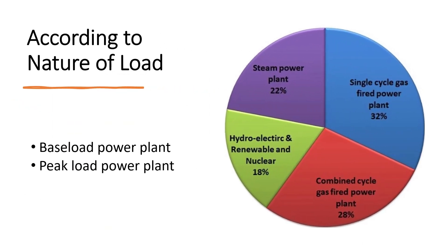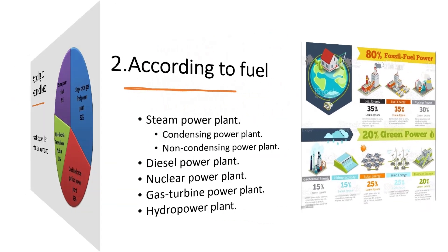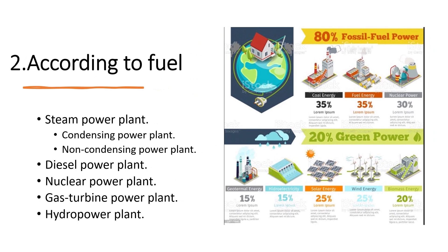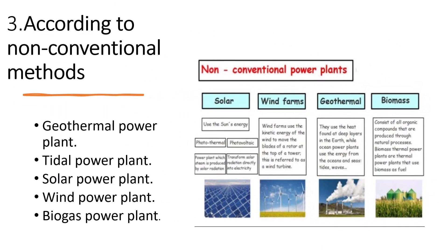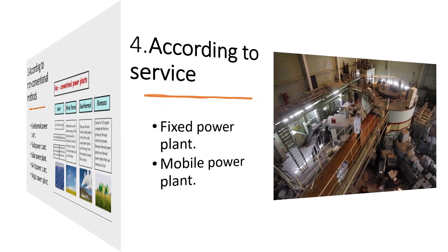According to nature of load, there are two types of plants: base load power plant and peak load power plant. Steam power plant is further divided into condensing power plant and non-condensing power plant. Diesel power plant, nuclear power plant, gas turbine power plant, and hydro power plant are the types based on fuel. Non-conventional methods of power generation include geothermal, tidal, solar, wind, and biogas power plants.